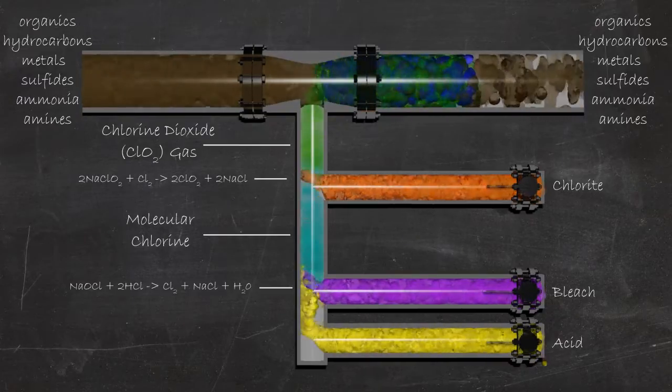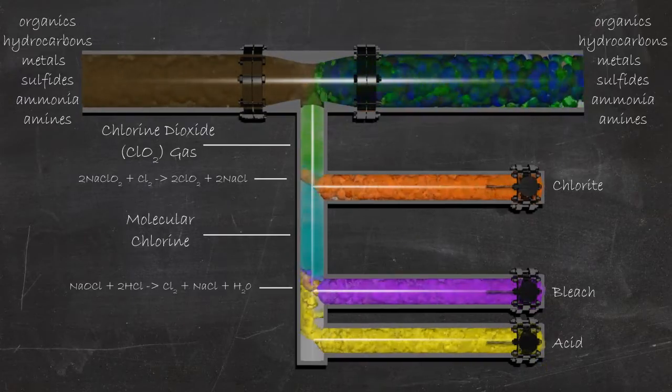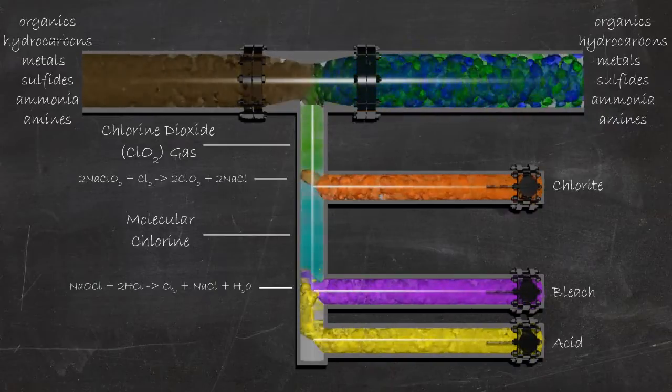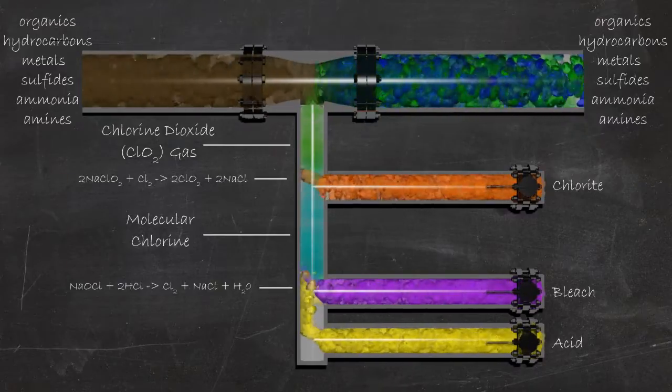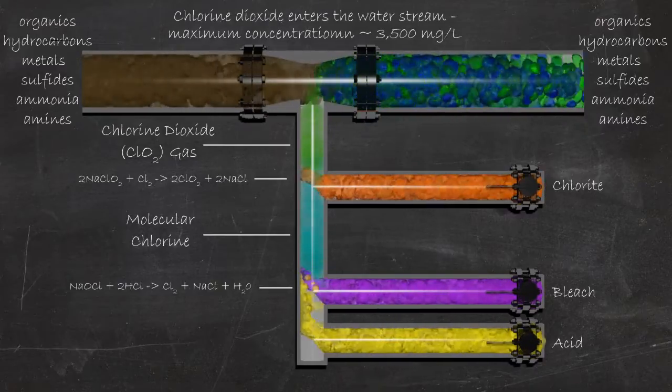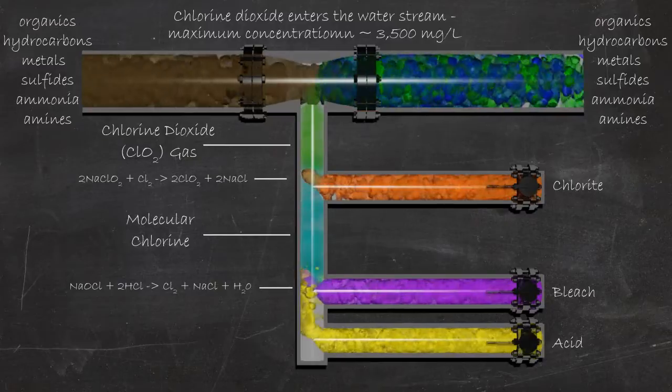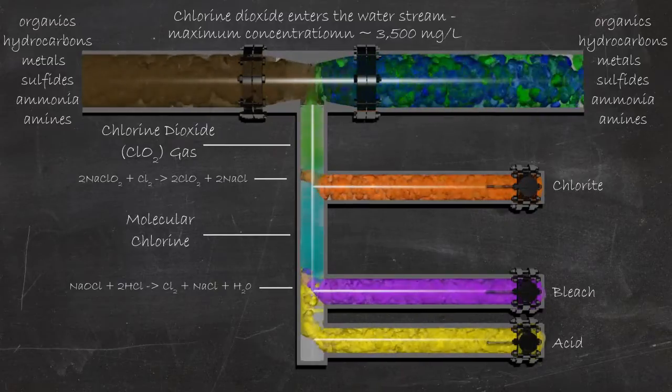Once formed, the Chlorine Dioxide rapidly expands and exits the column in less than 2 ten thousandths of a second. The reaction is complete before it enters the fluid stream powering the Venturi. Reactions in the water or fluid stream are limited to Chlorine Dioxide reactions with the contaminants in the stream.